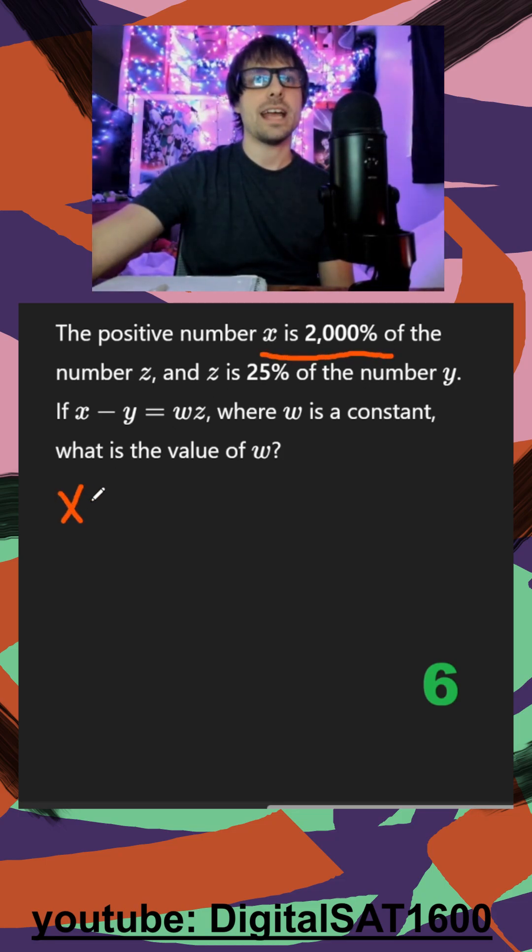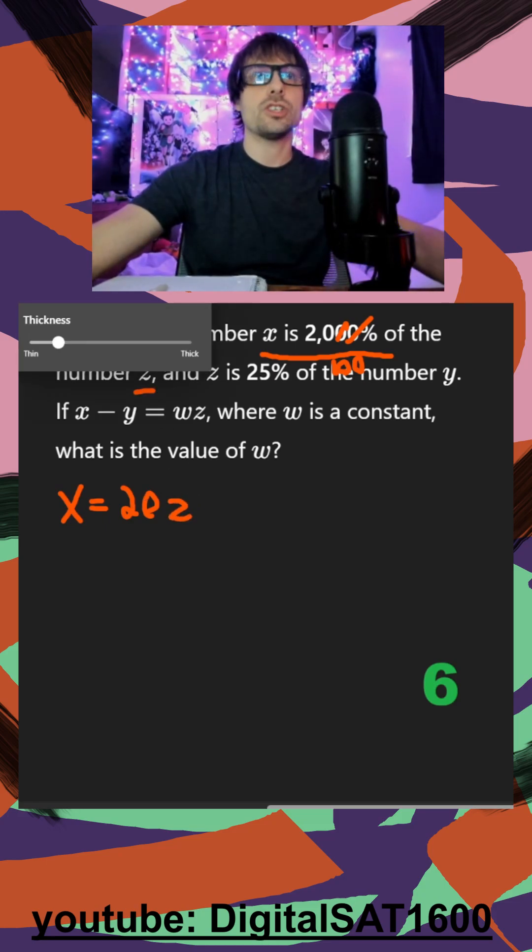So down below I can say x equals 2,000%. Whenever I want to use a percentage in an equation, we divide by 100. So if I divide that by 100, it gets rid of two zeros, so it's 20. And then 'of' is multiplied, so 20 times the number z. So x is equal to 20z is our first equation.